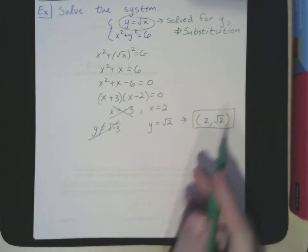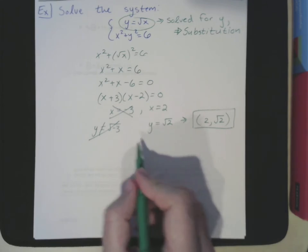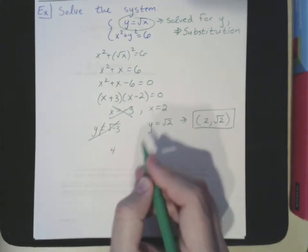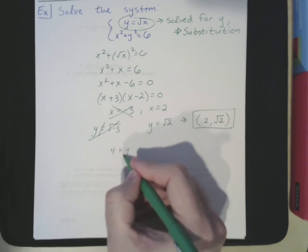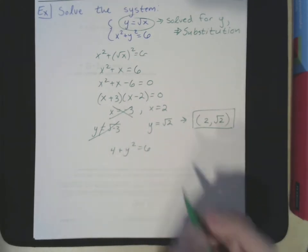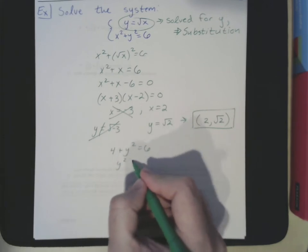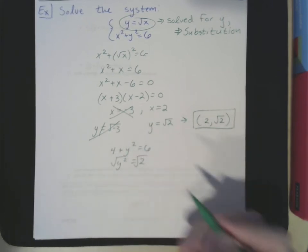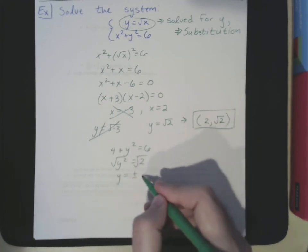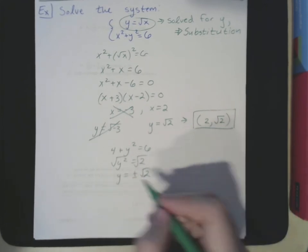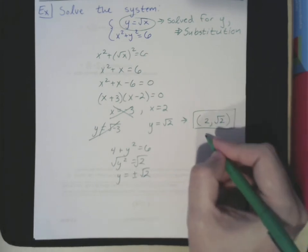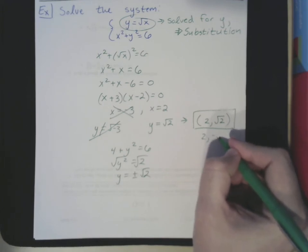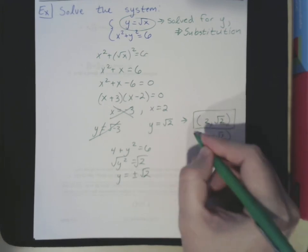We also plug x equals 2 back into the second equation. So we have 4 plus y squared equals 6, meaning y squared equals 2, and y equals plus or minus the square root of 2. Since we already have the positive one, this gives us a second answer: (2, −√2).